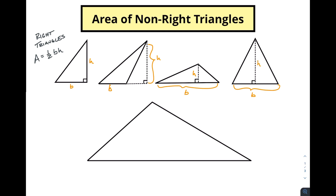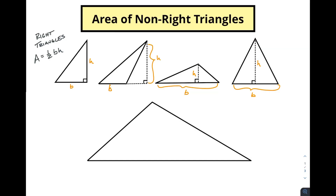But what happens if we don't have these heights? These three are all non-right triangles. How do we find these heights if we don't have them? Maybe instead we've got a side and the base but not the height. That's what we're going to do in this video — look at what happens if we have two sides and an angle but no height.